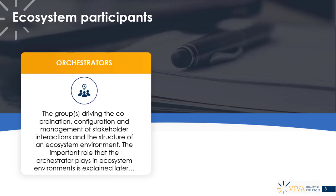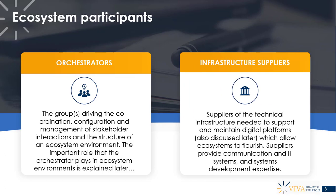The next group is called orchestrators — the groups driving the coordination, configuration, and management of stakeholder interactions and the structure of an ecosystem environment. The important role of the orchestrator will be explained in more detail later. Then we have infrastructure suppliers: suppliers of the technical infrastructure needed to support and maintain digital platforms, which allow ecosystems to flourish. They provide communication and IT systems and systems development expertise. The modern ecosystem has coincided with the advent of information technologies — particularly the internet, wireless technologies, and cloud technologies.